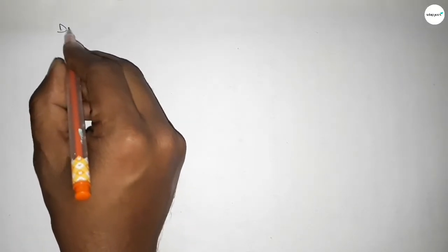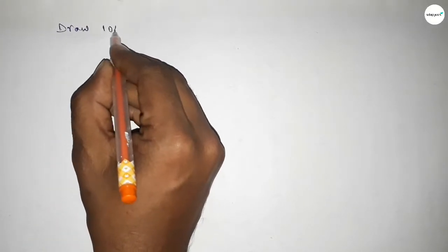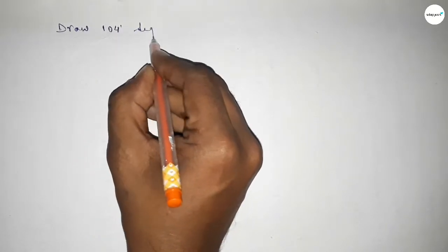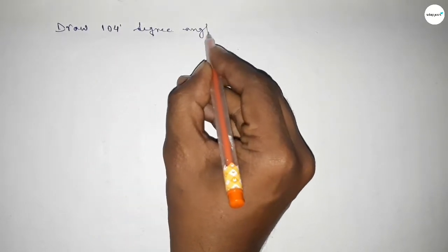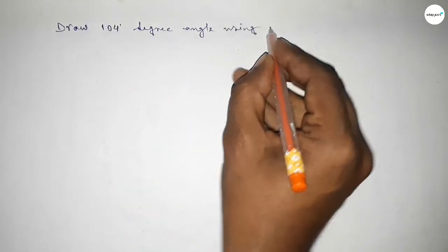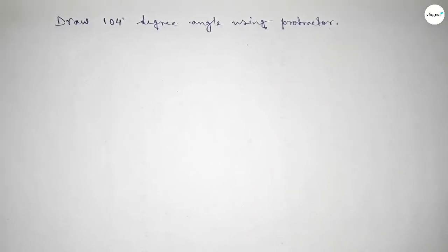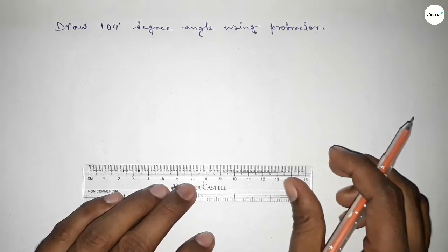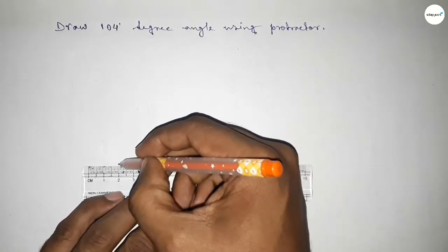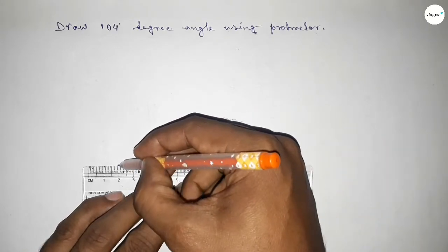Hi everyone, welcome to SI Share Classes. Today in this video we have to draw a 104 degree angle by using a protractor. So let's start the video. First of all, we have to draw here a straight line of any length.